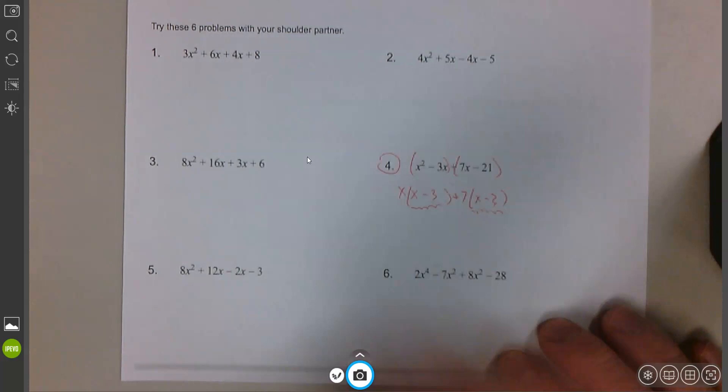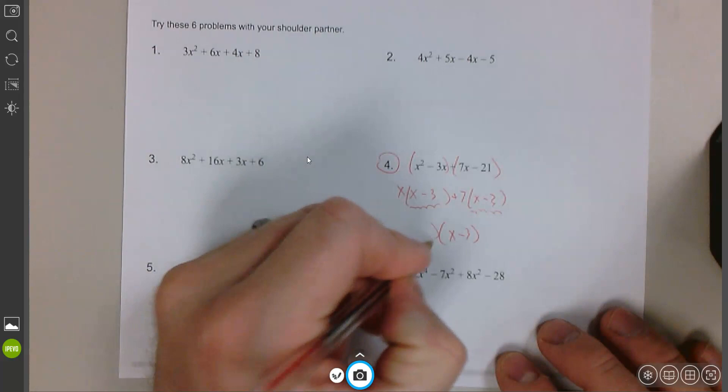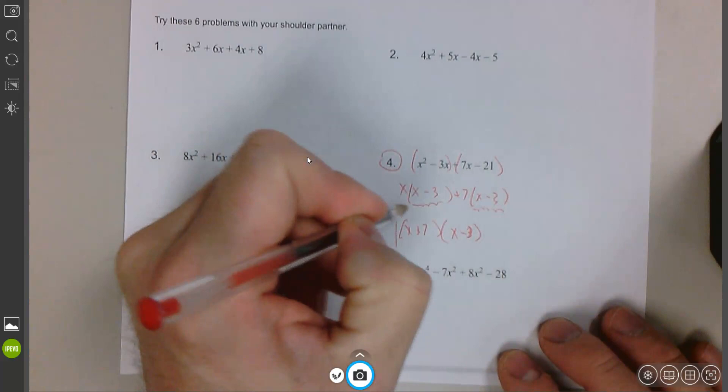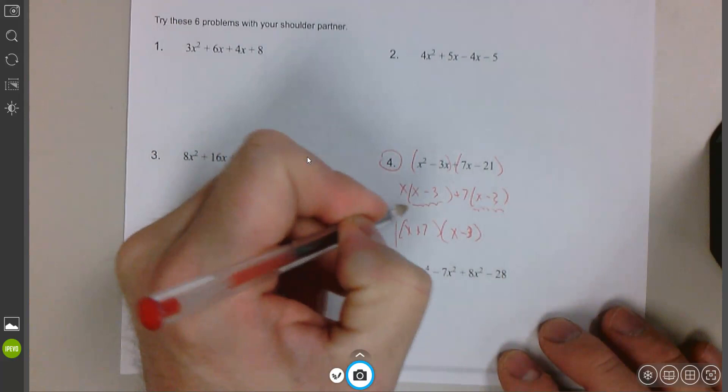Now because these two things, these two factors match, that is one of the factors in my answer. X minus 3. The other factor comes from the stuff that we GCF'd out front, the X and the plus 7. So I put X plus 7, and we're good. That is factoring using grouping. X plus 7, X minus 3.